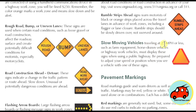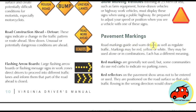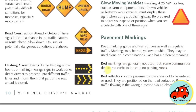Slow moving vehicles traveling 25 miles per hour or less — such as farm equipment, horse-drawn vehicles, or highway work vehicles — must display slow-moving vehicle signs when using public highways. Be prepared to adjust your speed or position when you see a vehicle with one of these signs. Pavement markings guide and warn drivers as well as regulate traffic. Markings may be red, yellow, or white and may be used alone or in combinations. Red markings are generally not used, but some communities do use red curbs to indicate no-parking zones. Red reflectors on pavement show areas not to be entered — they are positioned so only traffic flowing in the wrong direction would observe them.